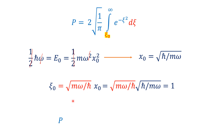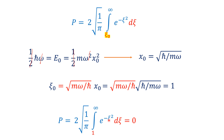Now the integral becomes p = 2·√(1/π) · ∫₁^∞ e^(−z²) dz. Since z₀ = 1, we integrate from 1 to ∞. As mentioned, we cannot solve this analytically; we must use a numerical method or refer to a table. The value of this integral, with the multiplication factor, is equal to 0.157. Thank you very much for watching and supporting me continuously.